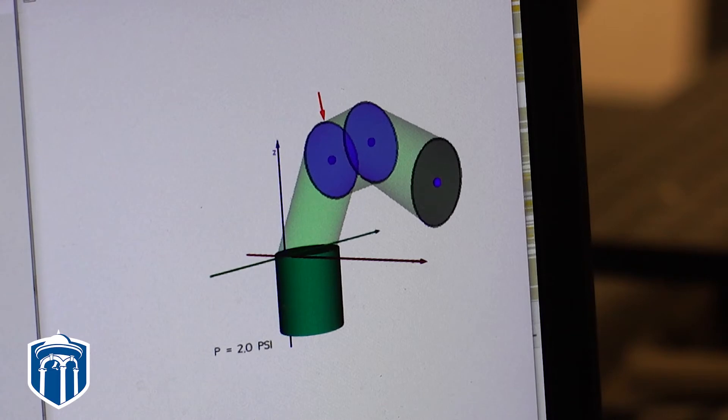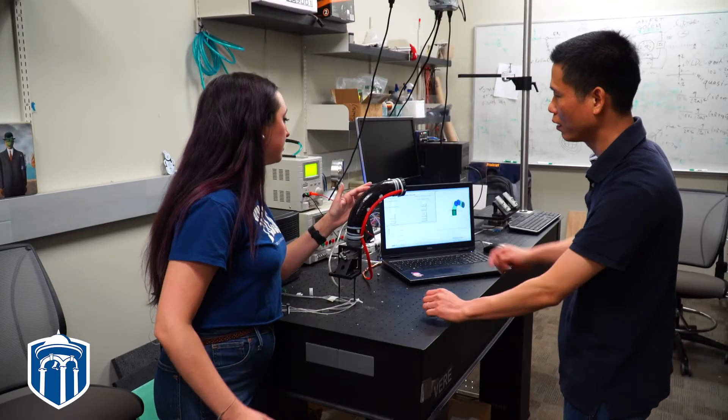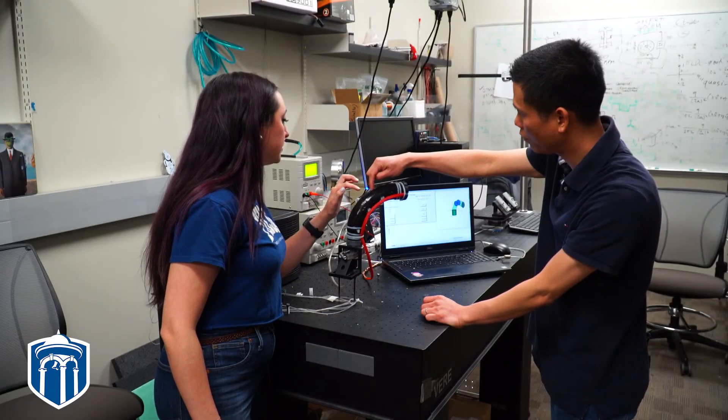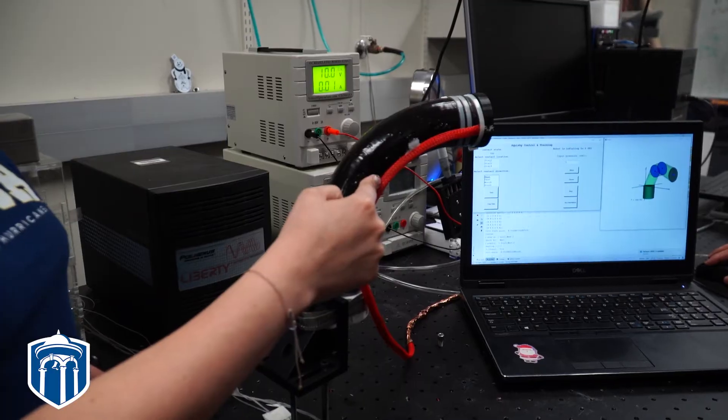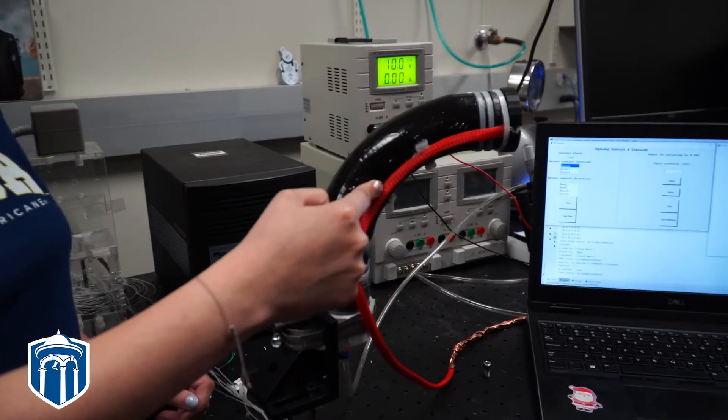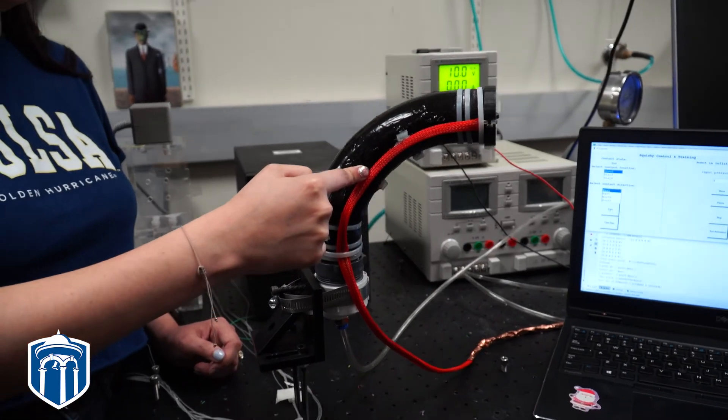At different pressure you can see it has a different shape and pose. So our task is to measure the current pose of this robot to define its shape and position in 3D space.